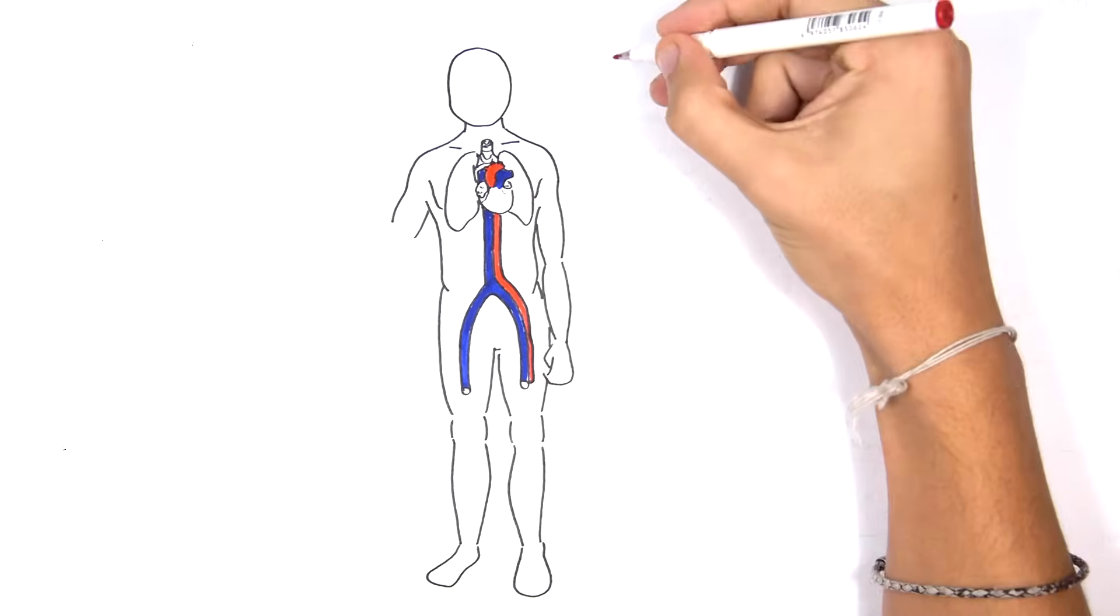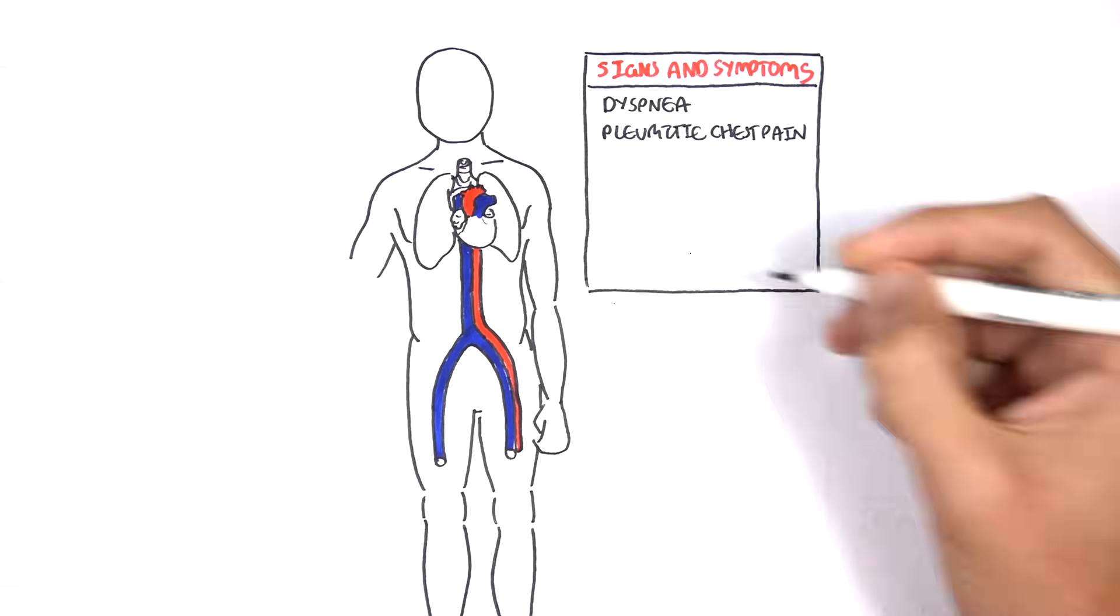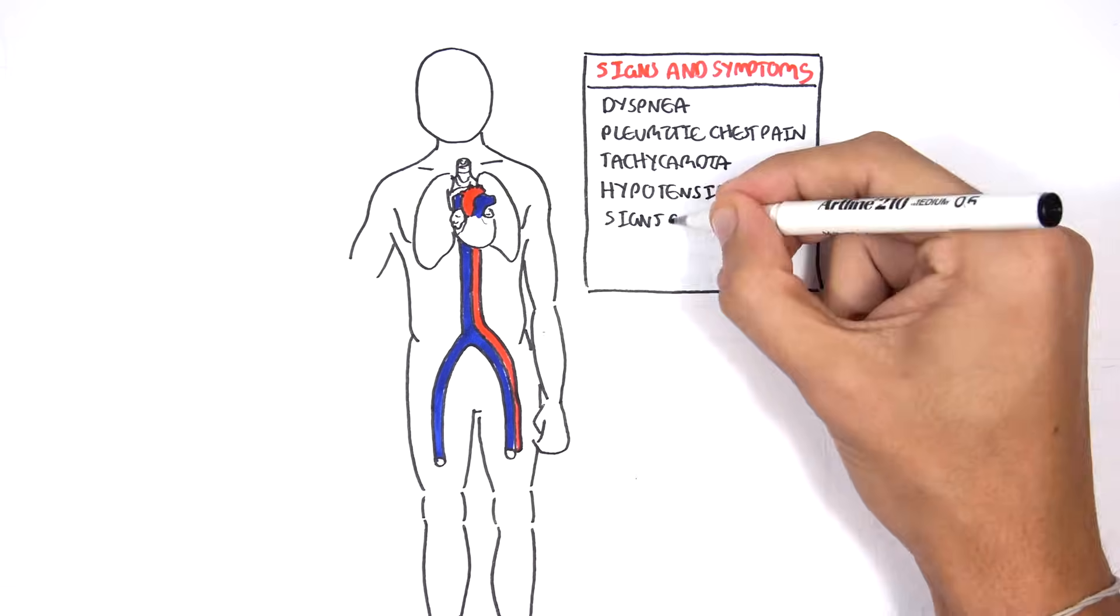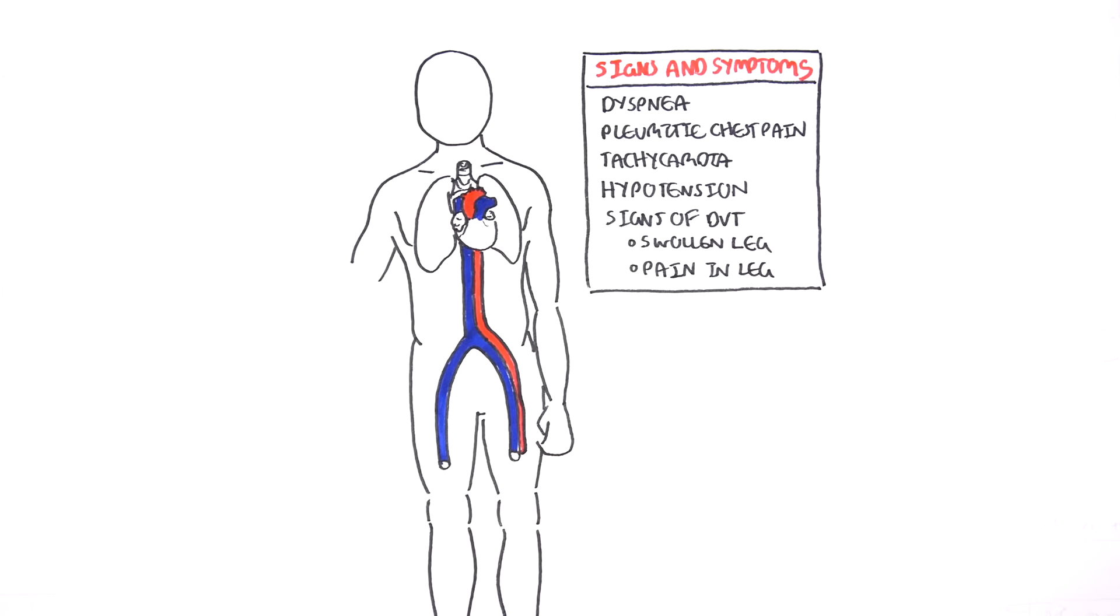The signs and symptoms of pulmonary embolism include dyspnea, pleuritic chest pain, tachycardia, hypotension, and signs of deep vein thrombosis which includes a swollen leg and pain in the lower legs.